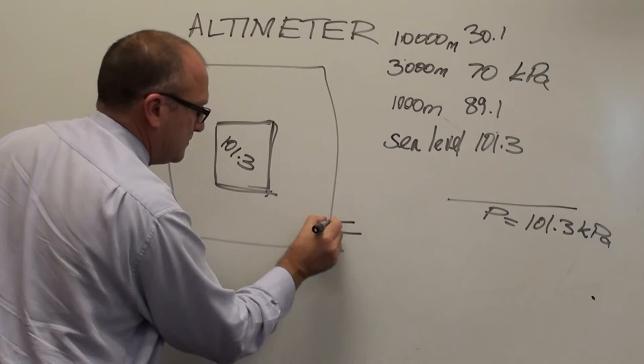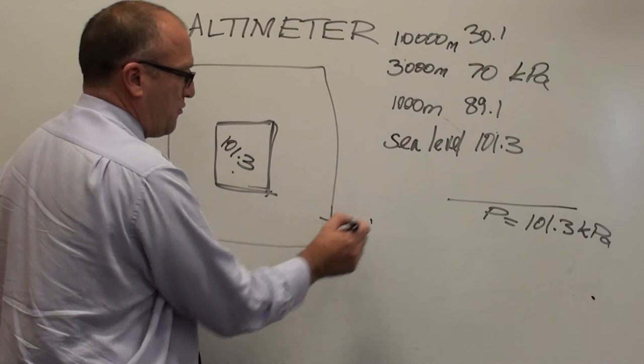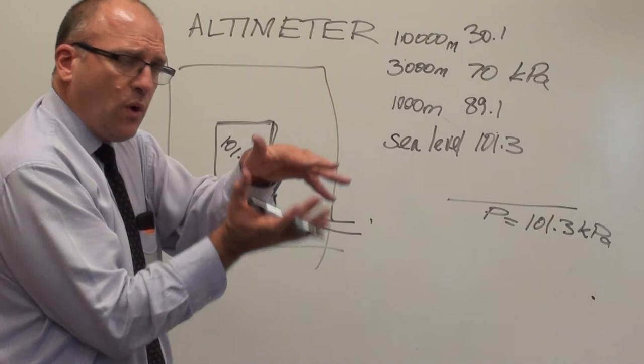Now let's get rid of the vacuum. Let's now open this thing up to the air. At sea level, the pressure inside that tin is 101.3, the pressure outside is 101.3. So it only expands in one direction.